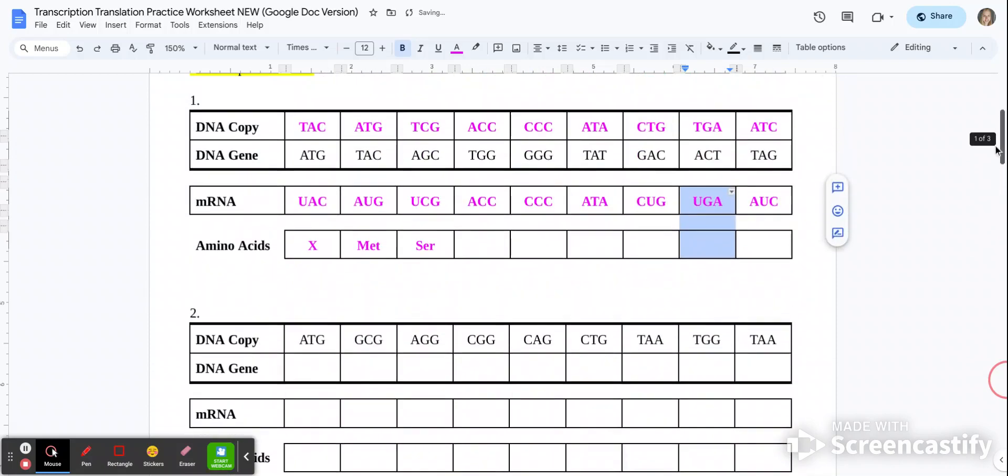When we get to that stop codon, we can go ahead and put an X, because that means our protein is stopping being made. It also means all of the rest of them after the stop codon can also be X's. So if in the next example, your stop codon is here, that means you're going to write X's for all the remainder ones.